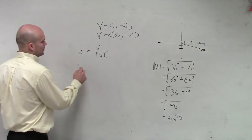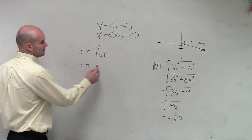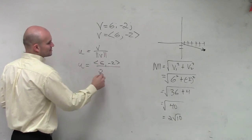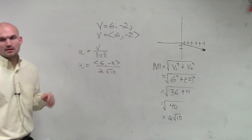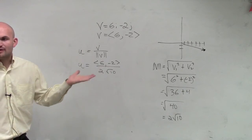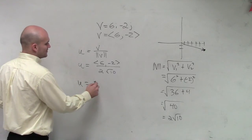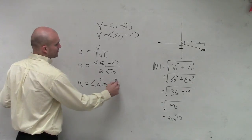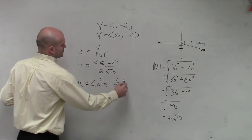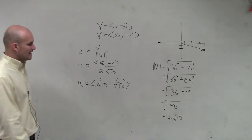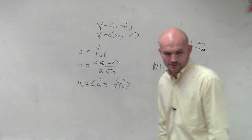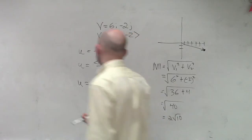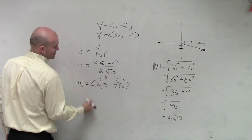So now we have u equal to v, which is our vector (6, negative 2), divided by 2 square root of 10. Then what we'll do is divide each vector component by the magnitude. Once we have it in that format, we can simply go ahead and reduce — divide the 2s.